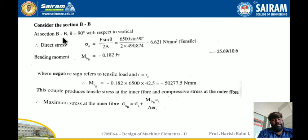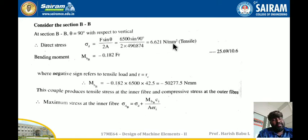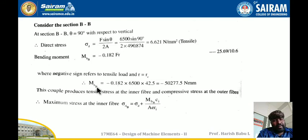For cross-section BB, since the vertical is taken as reference, theta equals 90 degrees. The direct stress Sigma_D equals F·sin(theta) divided by 2A. With F equals 6500 N and sin(90) equals 1, the direct stress equals 6.621 N/mm² — tensile. The bending moment MB at section B equals minus 0.183 × F × RC, where the negative sign indicates the tensile load sense, giving MB at B equals 50277.5 N·mm.